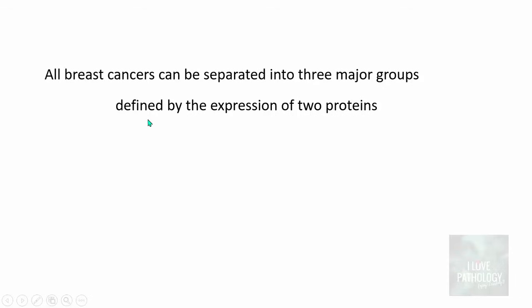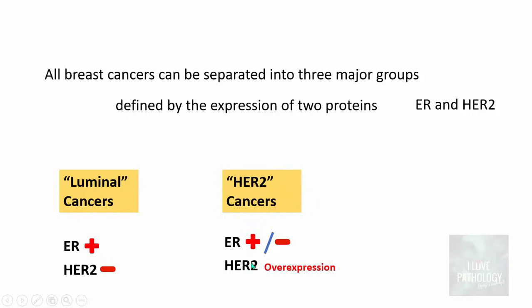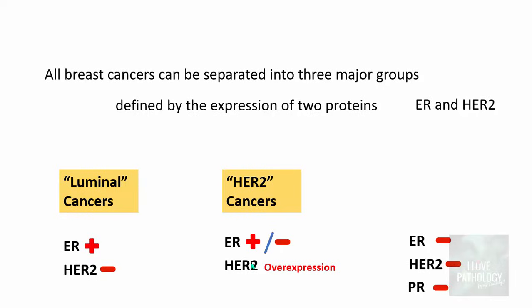All breast cancers can be separated into three major groups defined by the expression of two important proteins: ER (estrogen receptor) and HER2 (human epidermal growth factor receptor 2). When ER is positive and HER2 is negative, these are referred to as luminal type breast cancers. When ER is either positive or negative but HER2 is overexpressed, these are HER2 cancers. When all three receptors — ER, HER2, and PR — are negative, these are called triple-negative breast cancers (TNBCs).